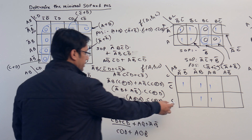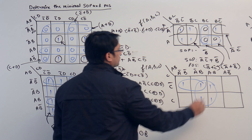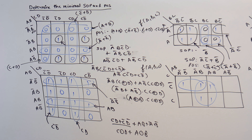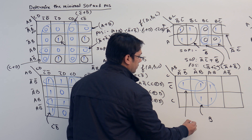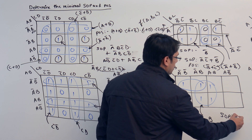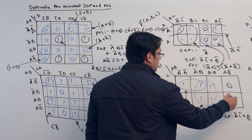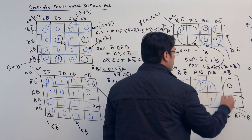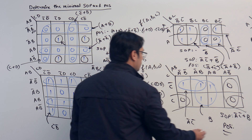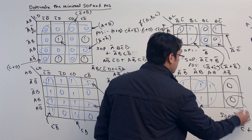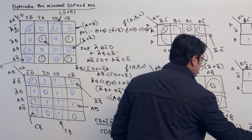For the next K-map, we make this subcube as well as this subcube, and also this subcube. This subcube is representing B and this subcube is representing A'C'. Therefore the SOP will be A'C' + B. For POS, these are the zero terms, so we make this subcube as well as this subcube — all essential primes. For POS we will have (C'+A') · (A'+B).